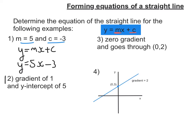Right, let's look at the second example. Gradient of 1, well that means m is equal to 1. y-intercept of 5 means c is 5. So the equation of a line is of the form y equals mx plus c.